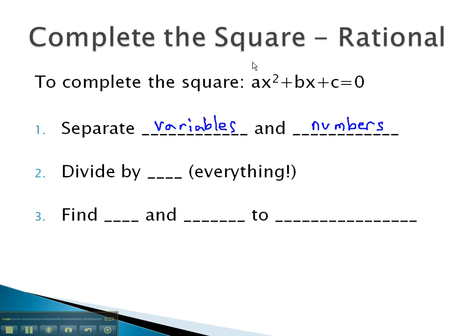Once we've done that, we'll want to get rid of the a, because there was never an a when we completed the square. We will divide everything by a. Once we've done that, we can find c and add it to both sides.